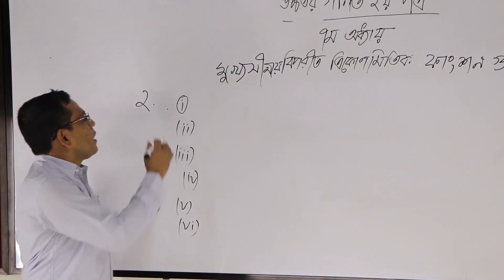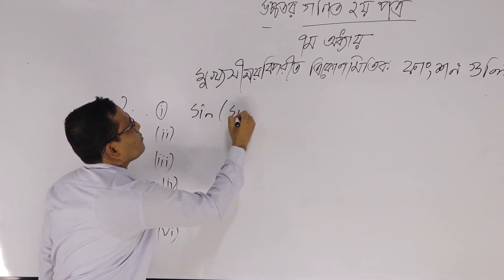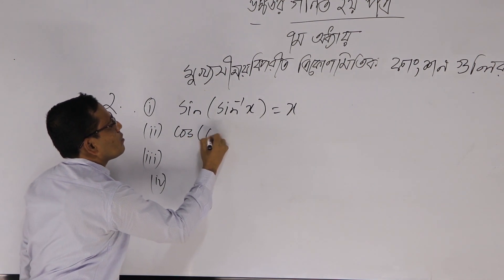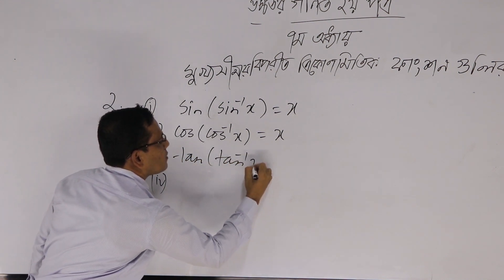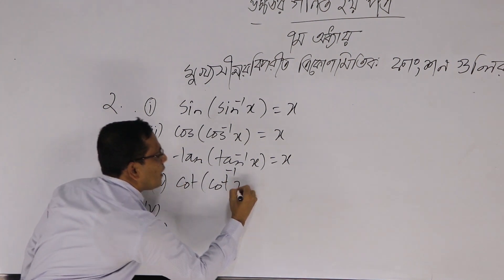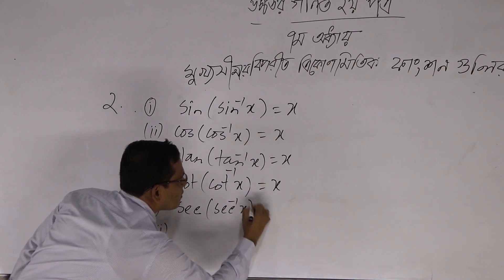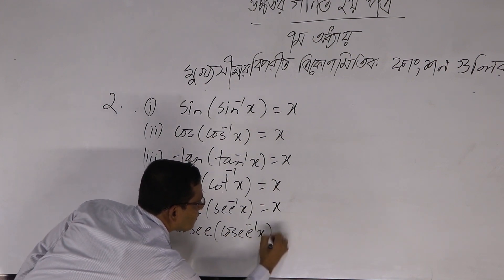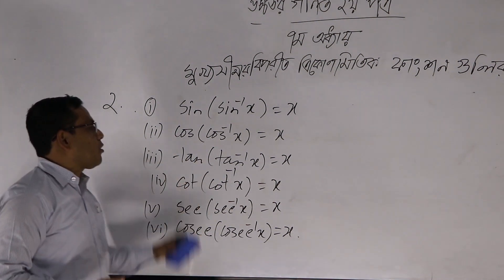Number 2: we need to know sin inverse x plus cos inverse x equals some value. Cos inverse x plus some x. Then tan inverse x plus some x. What is cot inverse x? What is sec inverse x? How will we learn these formulas for number 2?